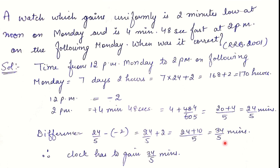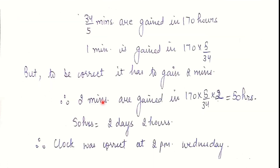The total gain comes out to 34/5 minutes. However, to show the correct time, the watch only needs to gain 2 minutes from its slow starting position — then it will be correct. Applying the unitary method: 34/5 minutes are gained in 170 hours, so 1 minute is gained in 170 × 5/34 hours. Therefore, 2 minutes are gained in 170 × 5/34 × 2 = 50 hours.